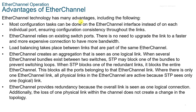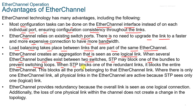Now we have some advantages of using EtherChannel. Most configuration tasks can be done on the EtherChannel interface instead of on each individual port, ensuring configuration consistency throughout the links. EtherChannel relies on existing switch ports — there's no need to upgrade to a faster and more expensive connection. You get load balancing between the links that are part of the same EtherChannel. EtherChannel creates an aggregation that is seen as one logical link. When several EtherChannel bundles exist between two switches, STP may block one of the bundles to prevent switching loops, blocking the entire EtherChannel and all ports belonging to that link. Where there is only one EtherChannel link, all physical links in the EtherChannel are active because STP only sees one link.